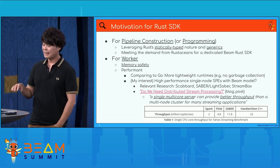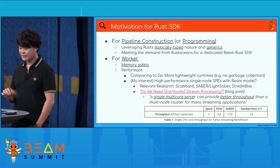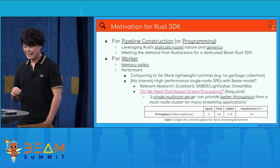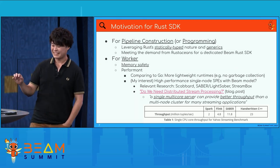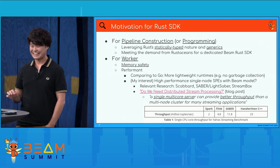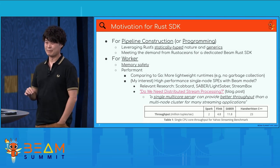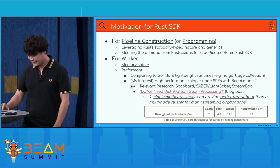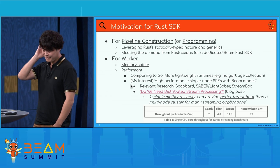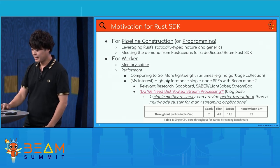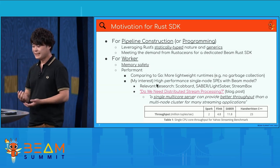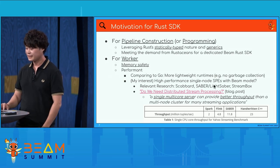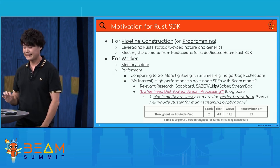For example, Go has garbage collection in its runtime, but Rust does not. Of course, I know Go is a very fantastic language — there are many Googlers maybe here. This is a bit of my personal interest, but a Rust SDK in Beam would realize high-performance single-node stream processing.